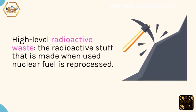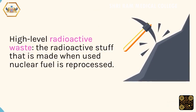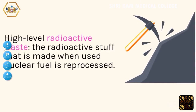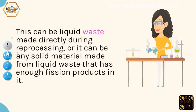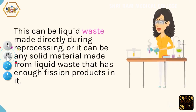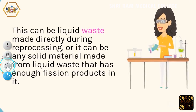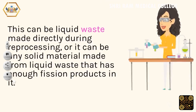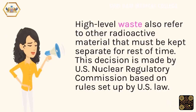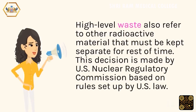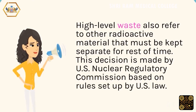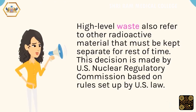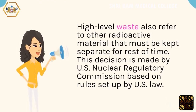High-level radioactive waste: the radioactive stuff that is made when used nuclear fuel is reprocessed. This can be liquid waste made directly during reprocessing, or it can be any solid material made from liquid waste that has enough fission products in it. High-level waste also refers to other radioactive material that must be kept separate for the rest of time. This decision is made by the U.S. Nuclear Regulatory Commission based on rules set up by U.S. law.